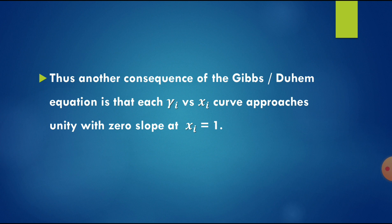This is another consequence of the Gibbs-Duhem equation. From this result, if you draw a gamma_i versus x_i curve, that curve approaches unity with zero slope at x_i equals 1.